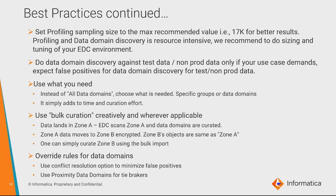Another best practice is bulk curation. If your data flows through multiple zones — say A to B to C — and you've curated zone A data elements, you can export that curation and apply the same export to zone B, since similar metadata is likely present there. This bulk curation approach saves significant effort across similar environments.